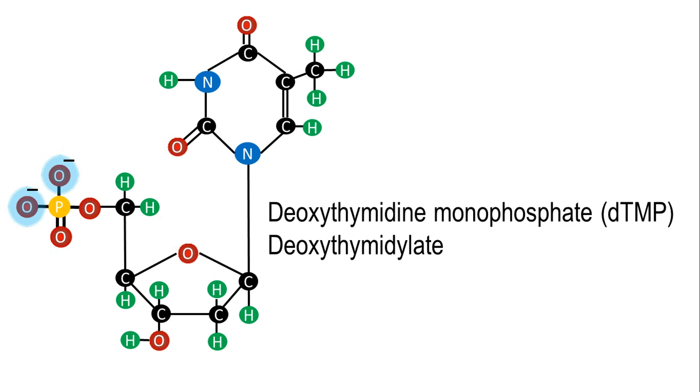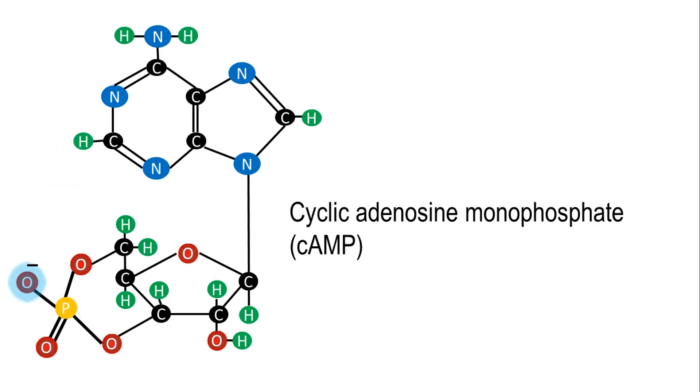There are some variations to this traditional nucleotide structure. Cyclic AMP, for instance, is a nucleotide of adenine which has a phosphate group covalently bound to both the 5' and 3' carbon of the ribose. This nucleotide plays a very important role in a variety of signaling pathways in the cell.